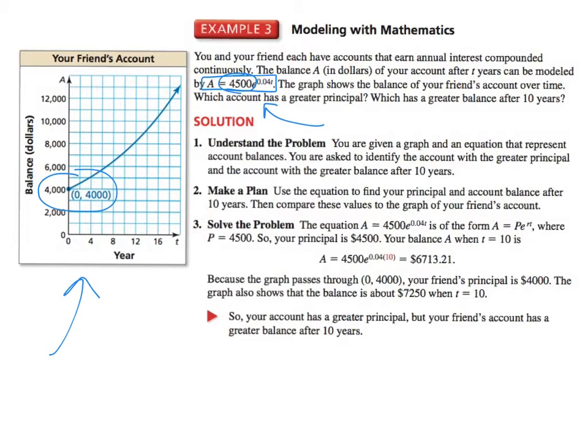So we want to go after 10 years. It looks like your friend is approximately just a little over $7,000. So if we plug in 10 to your account, that would give us 10 multiplied by 0.04, and we take e to that power, multiplied by 4,500.